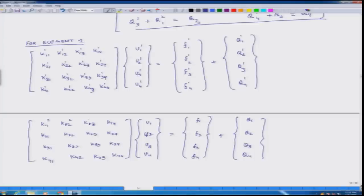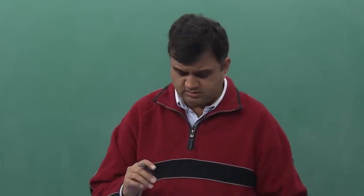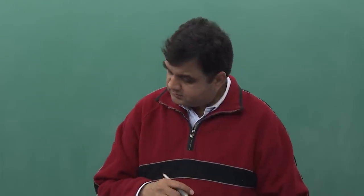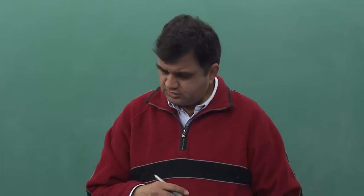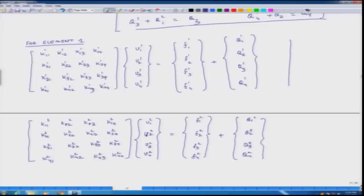And all these are related to the second element. So there is a superscript 2 everywhere. So this notation helps us avoid confusion and keep track of things. And these types of notations we frequently use when we actually write computer codes where we assign a number for each element. So this is for element 1 and this is for element 2.